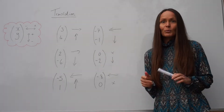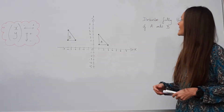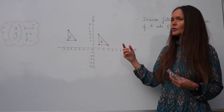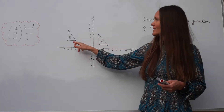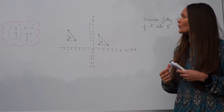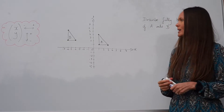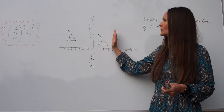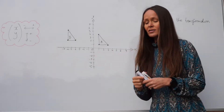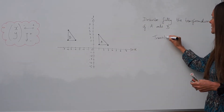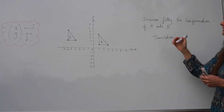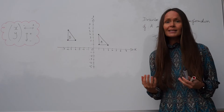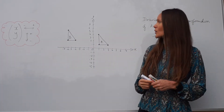In this example it says 'describe fully the transformation of A onto B.' Shape A is the start position — we call this the object — and B is the finished position, called the image. You can see this is a translation: it hasn't rotated, reflected, or changed size — it's just moved to the left and up. So the first thing to write down is that it's a translation. Then we need to find the column vector by seeing how many units the triangle has moved.